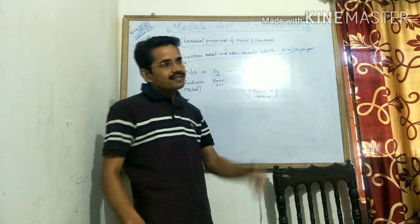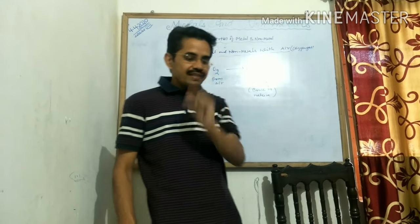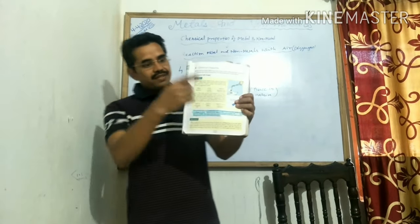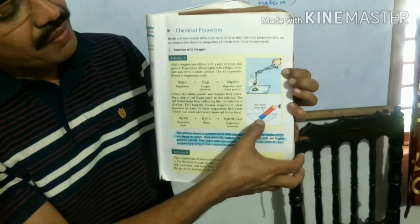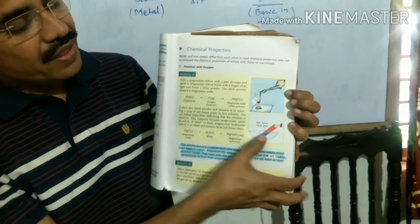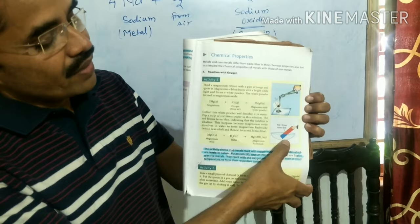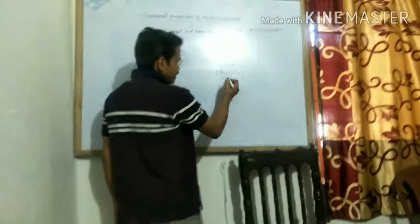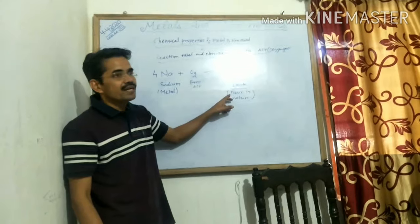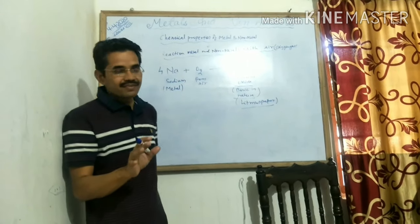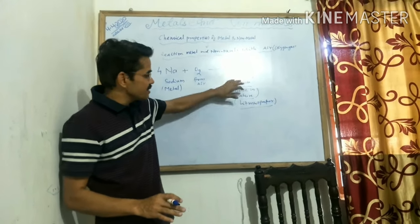All these oxides are generally basic in nature. How can we recognize that? With the help of an indicator. In the class 8 DAB book, you can see the oxide formed during the burning of magnesium. This magnesium oxide, when dissolved in water, forms magnesium hydroxide. This turns red litmus blue. Litmus paper is an indicator which helps us identify whether a substance is acidic or basic.